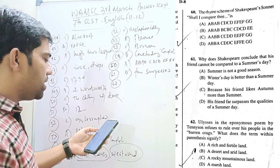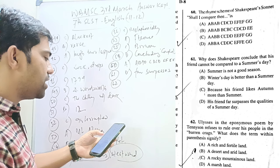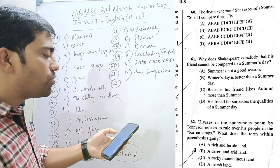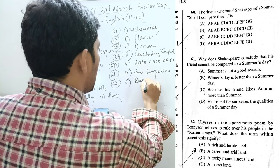Question 61. Why does Shakespeare conclude that his friend cannot be compared to a summer's day? Because his friend far surpasses the qualities of a summer's day. Question 62. Ulysses in the eponymous poem by Tennyson refuses to rule over the people in the barren crags. What does the term within parenthesis signify? So, barren crags means barren means unfertile and crags means mountainous rocky. So, the rocky mountainous land.